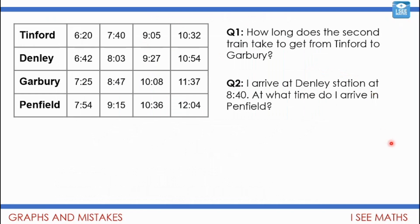We then looked at train timetables — here's a timetable travelling from Tinford down to Penfield, showing where each train stops at various stations. A couple of reminder questions: question one, how long does the second train take to get from Tinford to Garbury? Question two, I arrive at Denley Station at 8:40 — at what time do I arrive in Penfield? Pause the video and have a go at those two.